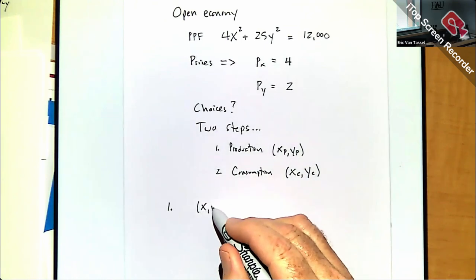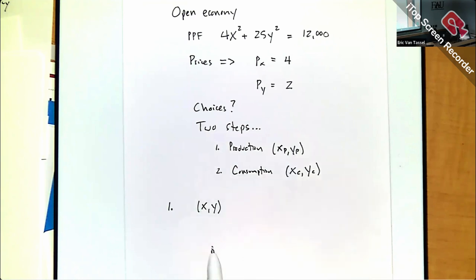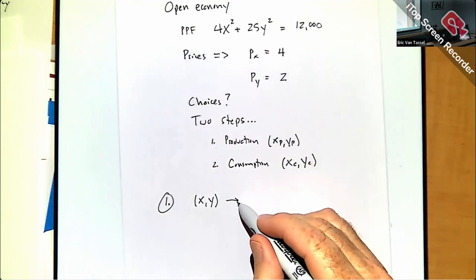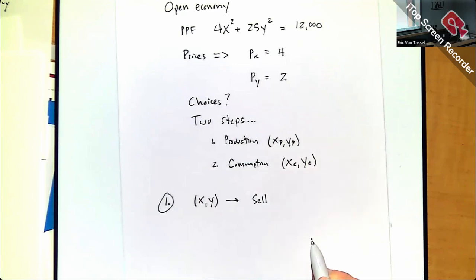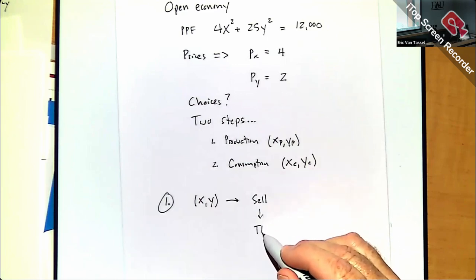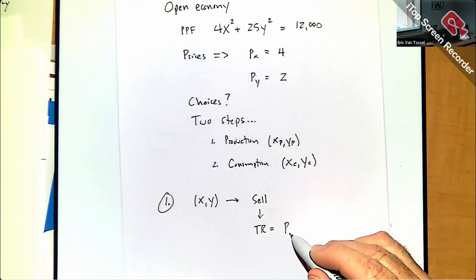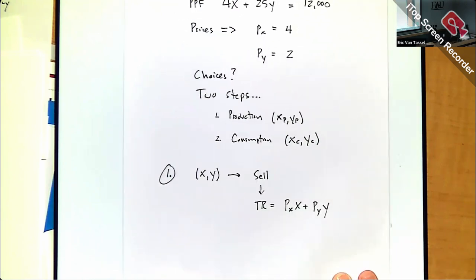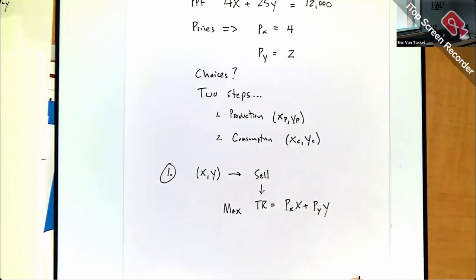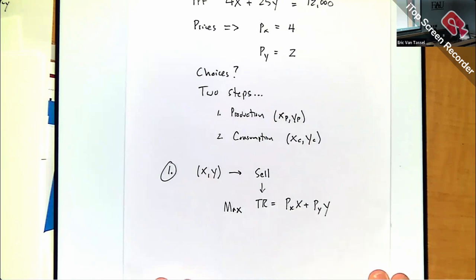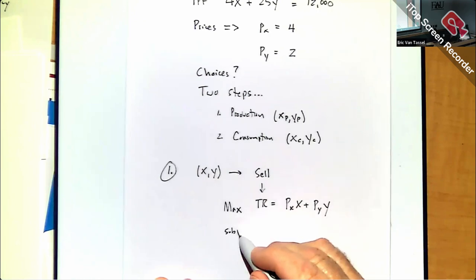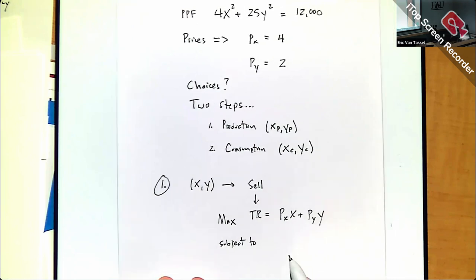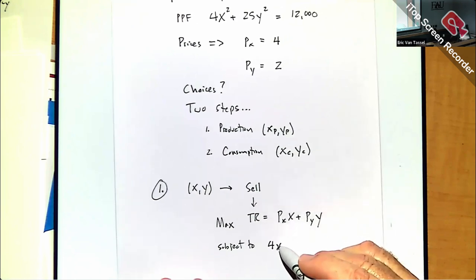That revenue creates a budget which we then take back into the market for the second step: figuring out which consumption basket maximizes utility. So production first — I'm picking XP and YP, selling them in international markets to generate total revenue: TR = PX·X + PY·Y, which I'm trying to maximize.